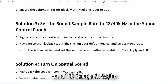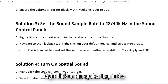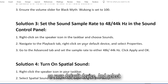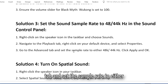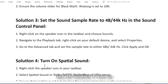Solution 3: Set the sound sample rate to 48kHz or 44kHz in the sound control panel. Right-click on the speaker icon in the taskbar and choose Sounds. Navigate to the Playback tab, right-click on your default device, select Properties, go to the Advanced tab, set the sample rate to either 48kHz or 44kHz, then click Apply and OK.